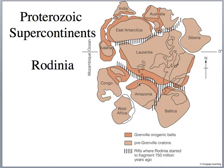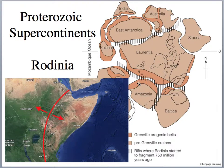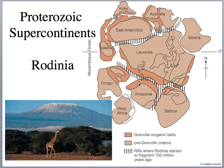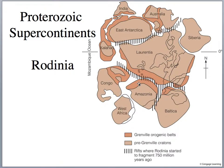Something significant to California and the western United States is what happened to Rodinia — Rodinia rifted, it broke apart. A modern example of a rift is the East African Rift, where Somalia and Ethiopia are breaking away from mainland Africa. There we find a rift valley, volcanic rocks, and big volcanoes like Mount Kenya and Mount Kilimanjaro. Here, we're going to see a rift occurring between Laurentia and East Antarctica and South Africa.